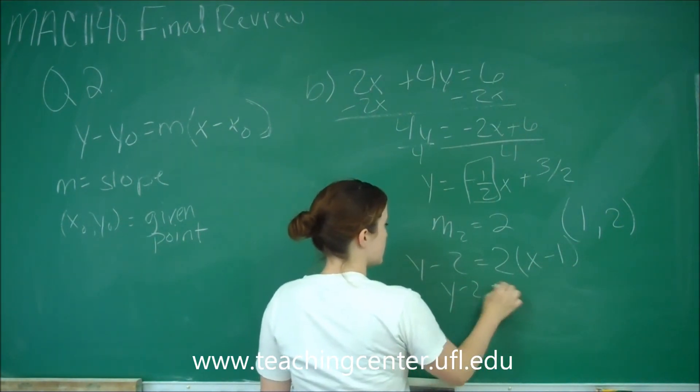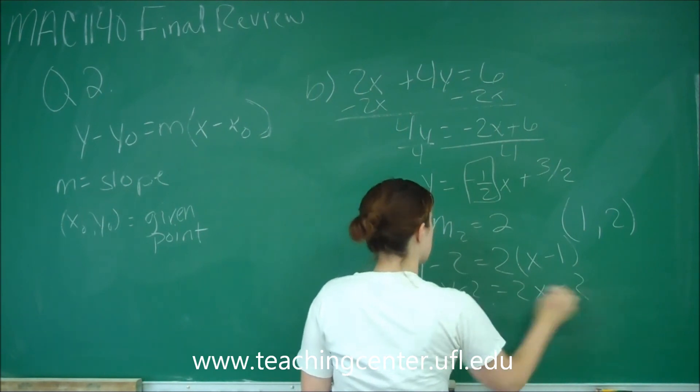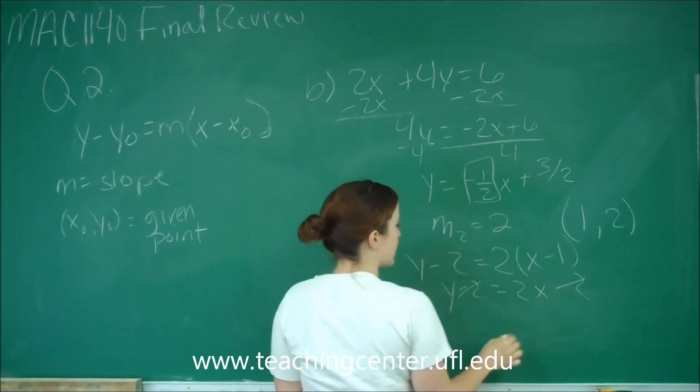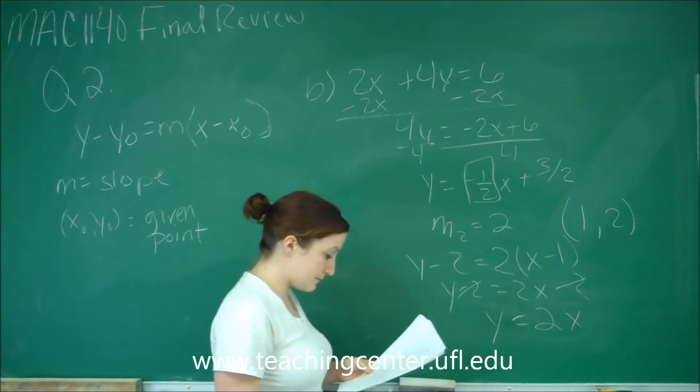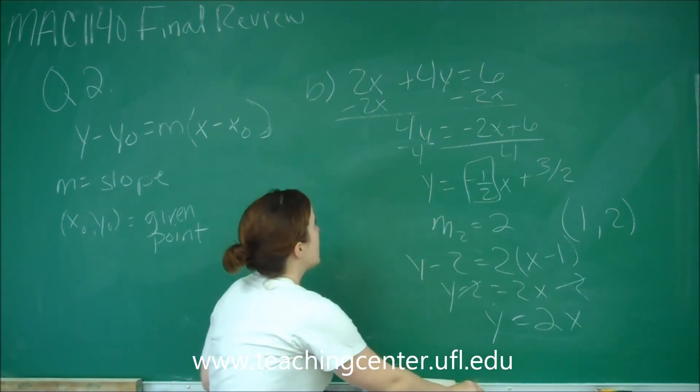That gives me y minus 2 equals 2x minus 2. I add 2 to both sides and that cancels out, so you just get y equals 2x. And that is part c.